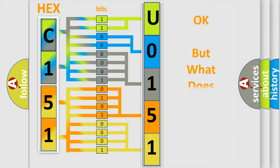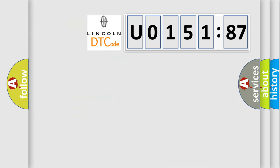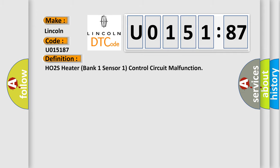We now know in what way the diagnostic tool translates the received information into a more comprehensible format. The number itself does not make sense to us if we cannot assign information about what it actually expresses. So, what does the diagnostic trouble code U015187 interpret specifically for Lincoln car manufacturers? The basic definition is: HO2S heater bank one sensor one control circuit malfunction.